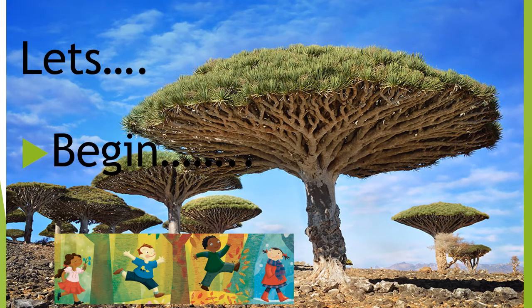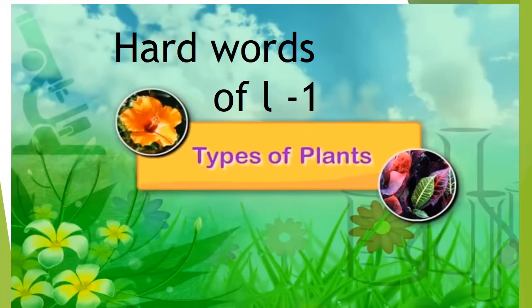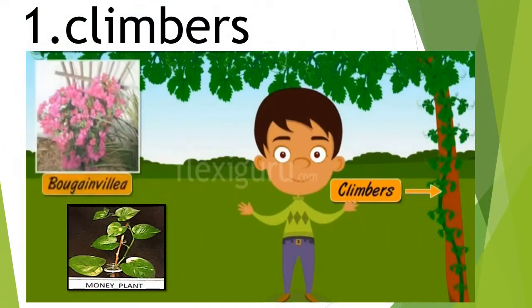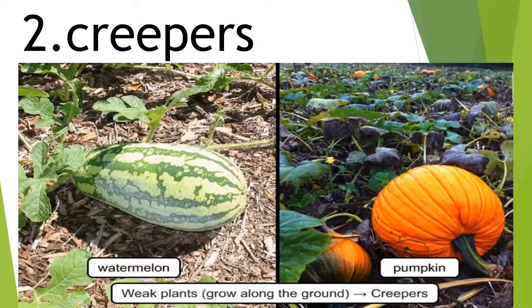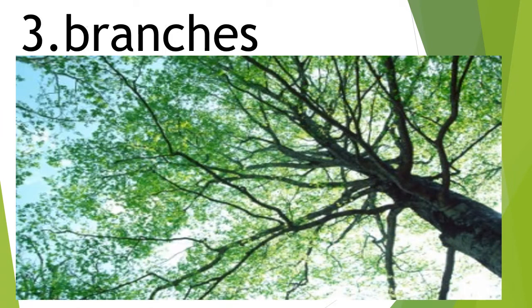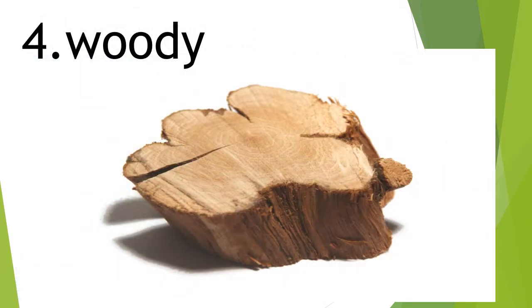Now let's begin children. Hard words of lesson 1, Types of Plants. Number 1: C-L-I-M-B-E-R-S, Climbers. Number 2: C-R-E-E-P-E-R-S, Creepers. Number 3: B-R-A-N-C-H-E-S, Branches.